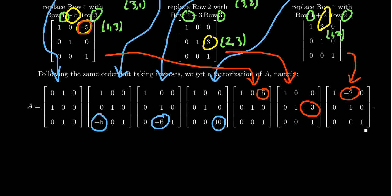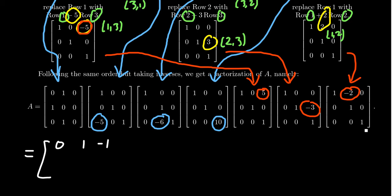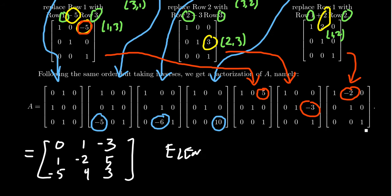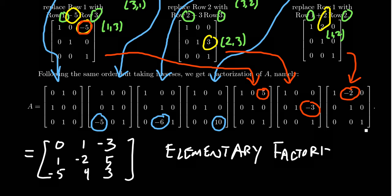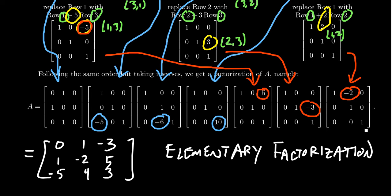This factorization is not unique — if we took a different sequence of elementary row operations to row reduce A into the identity, we could get a different factorization. The matrix A was 0, 1, negative 3 in the first row; 1, negative 2, 5 in the second; and negative 5, 4, 3 in the third. I'll leave it to the viewer to verify that the product of these seven matrices equals A. In our next section, we'll talk more about matrix factorizations — this elementary factorization is the key principle behind the LU factorization.